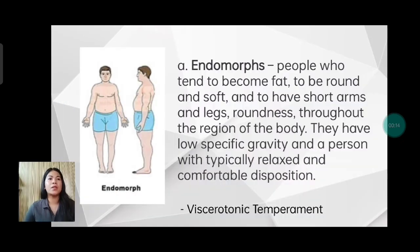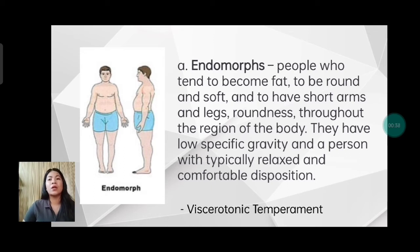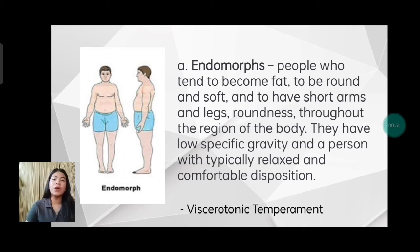First are endomorphs. These are people who tend to become fat, to be round and soft, and to have short arms and legs, with roundness throughout the regions of the body. They have low specific gravity and a typically relaxed and comfortable disposition. In endomorph, also known as viscerotonic temperament, they are seen as relaxed, sociable, tolerant, comfort-loving, peaceful, good-humored, and in need of affection. They also have a wide waist and large body structure.